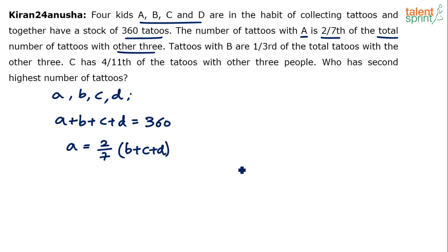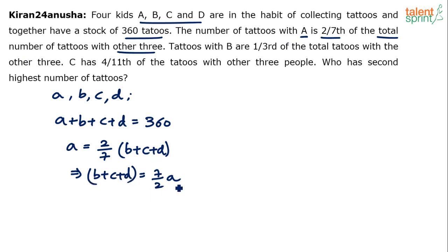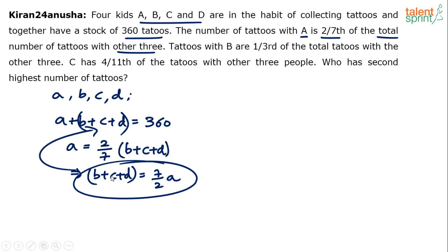A is equal to two-seventh of the total number of tattoos with the other three, which implies that B plus C plus D will be seven-by-two of A — the reciprocal of that. Now substitute this in the previous equation in place of B, C, D. What do we get? We get A plus seven-by-two A, which is nine-by-two A. So A plus seven-by-two A equals 360.